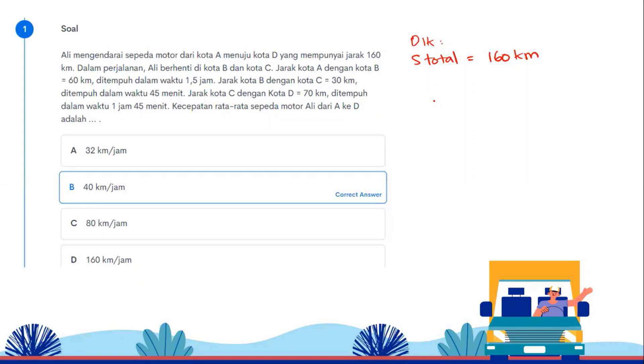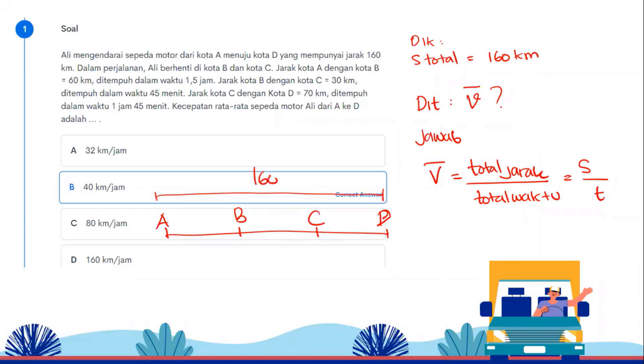The distance from city A to B is 60 km, completed in 1.5 hours. The distance from B to C is 30 km, completed in 45 minutes. The distance from C to D is 70 km, completed in 1 hour 45 minutes. The question asks for the average velocity. Remember, average velocity equals total distance divided by total time, from city A to city D passing through B and C. The total distance is 160 km.